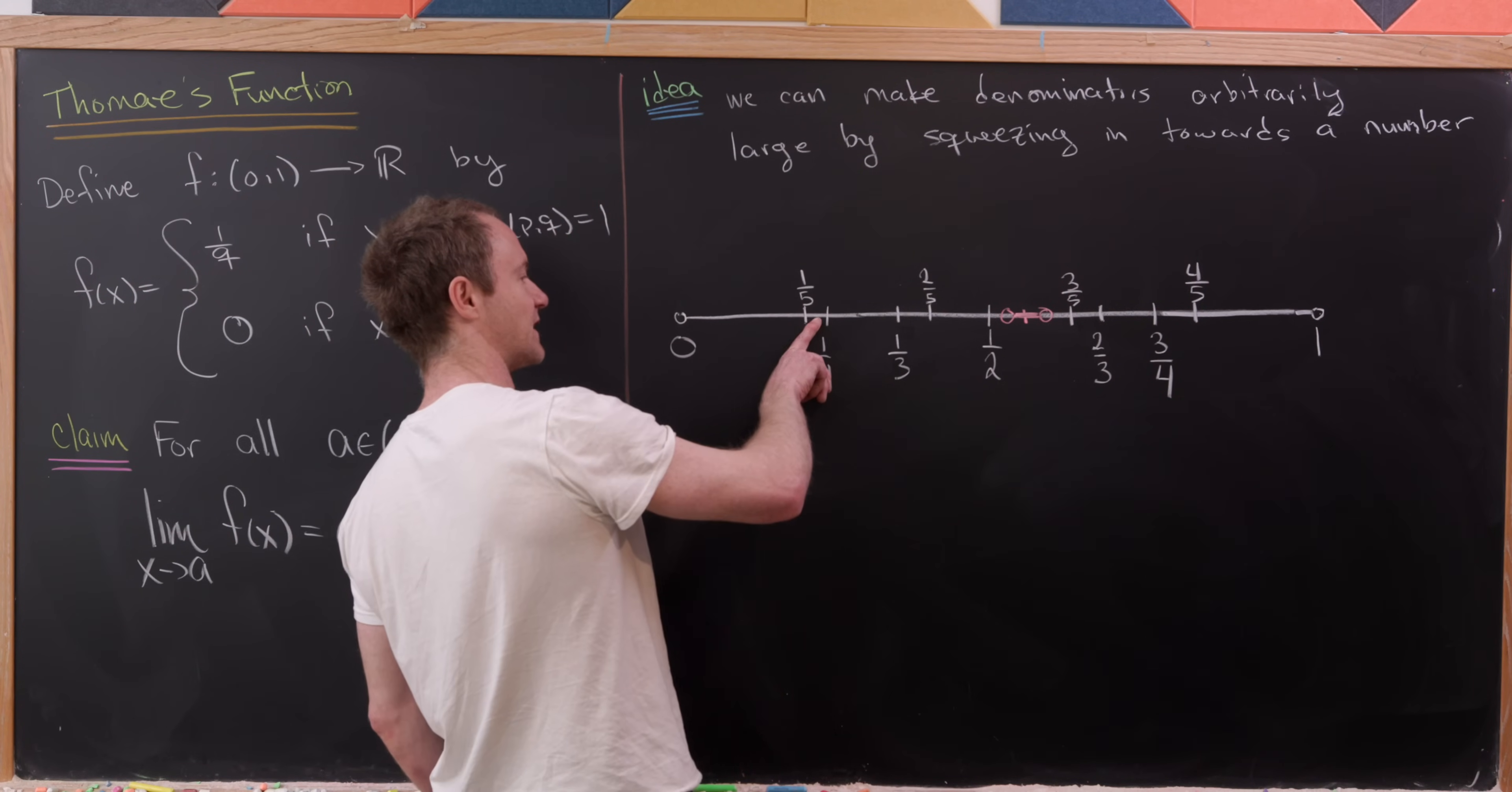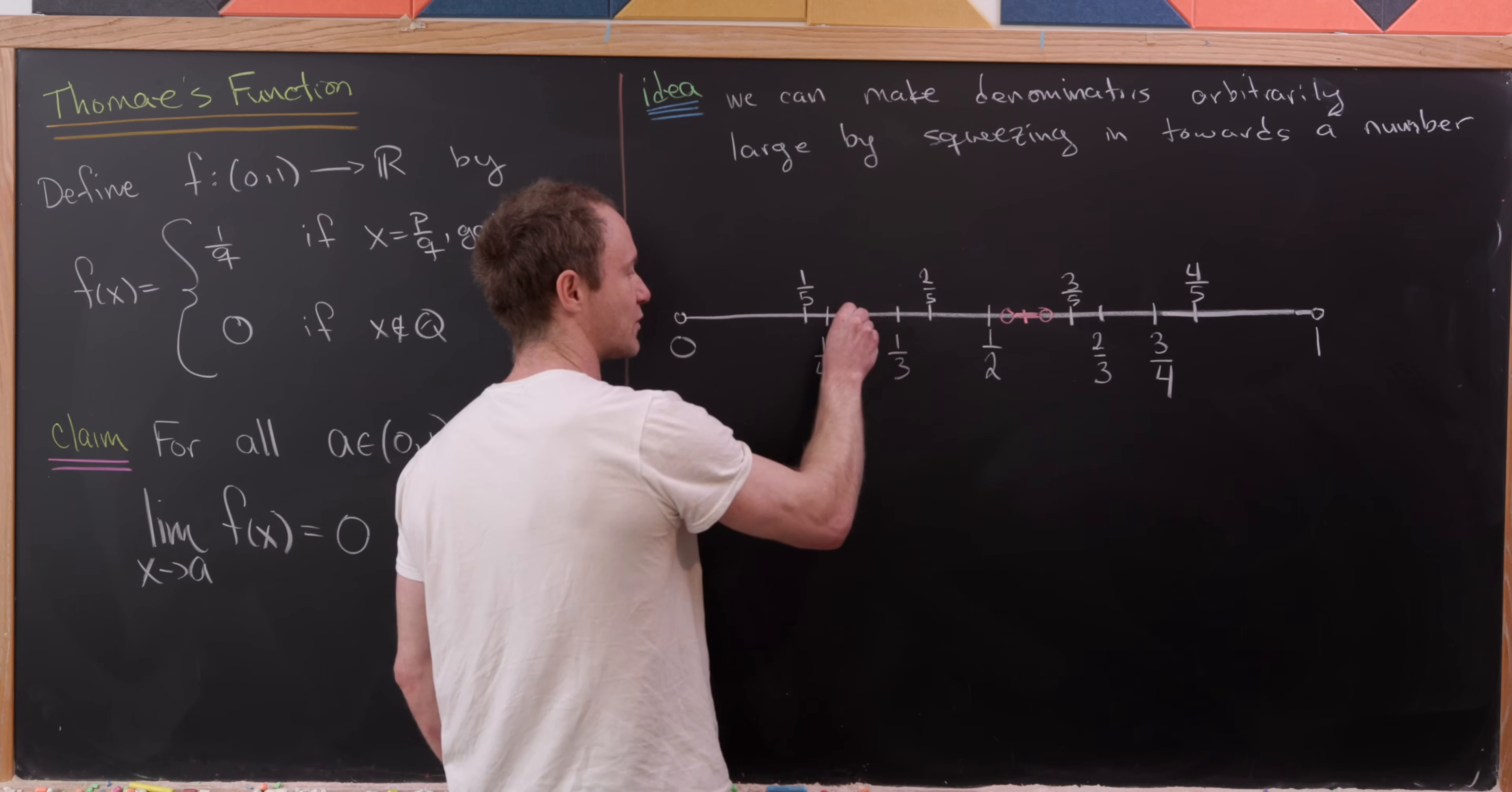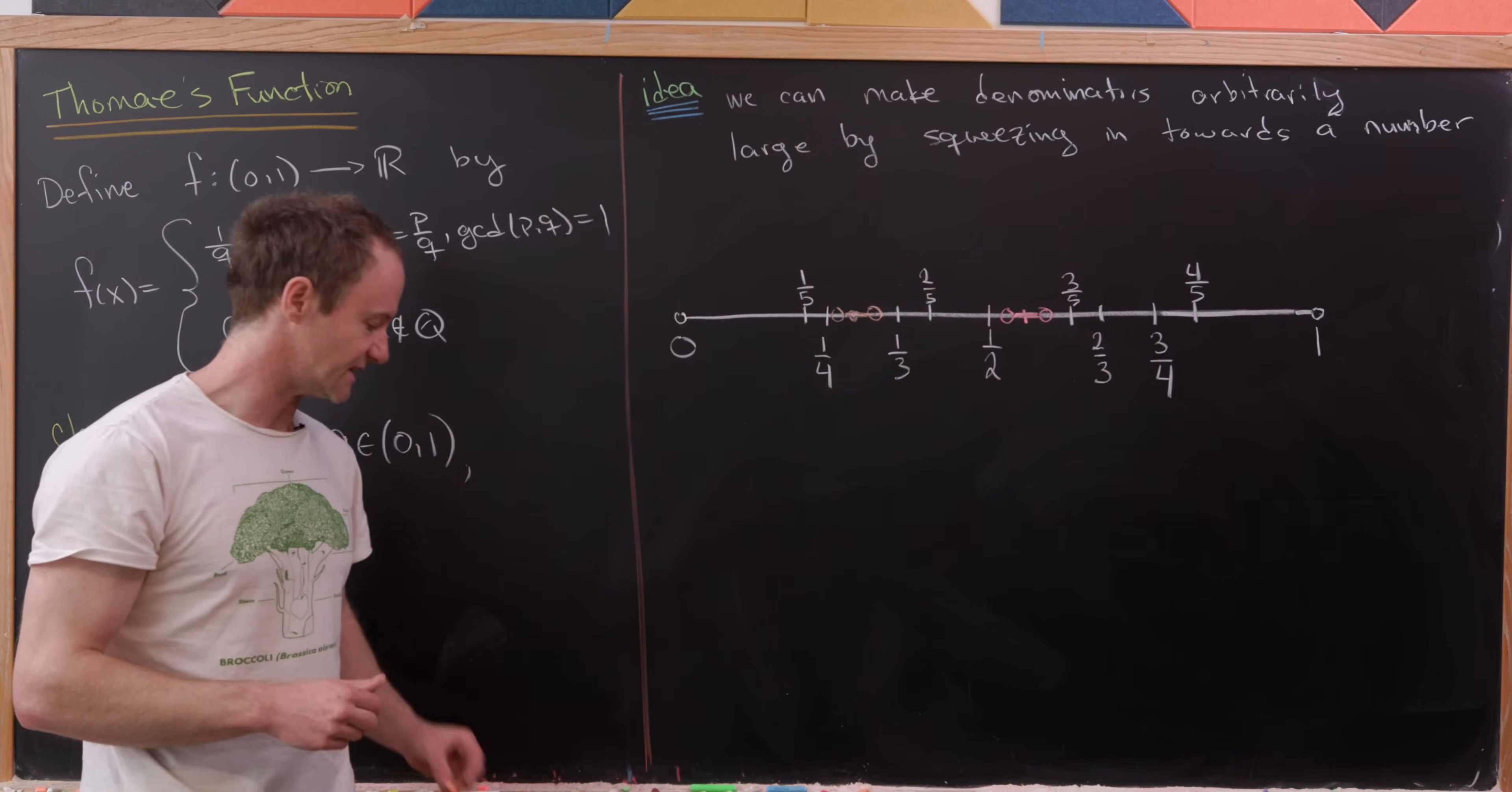So for example, if I start between a fifth and a fourth, well, then I've just got a tiny open interval in there. If I start between a quarter and a third, let's say this point right here, well, then I can make an open interval here as well. And I think you can visually see that this is possible regardless of where we start between zero and one.